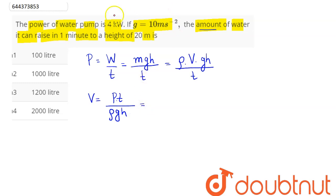So here power in the question is given as 4 kilowatt, which means 4 into 1000 watt. Time here is given as 1 minute, so 1 minute means 60 seconds. Divided by density of water is 1000 kg per cubic meter, and g here is 10, and height here is given as 20 meter.